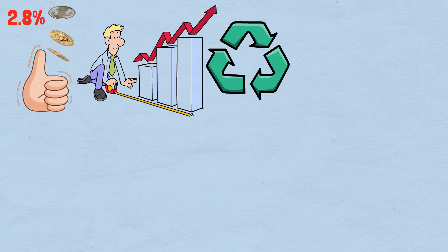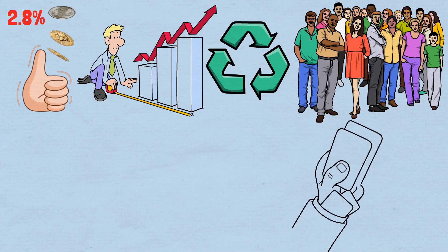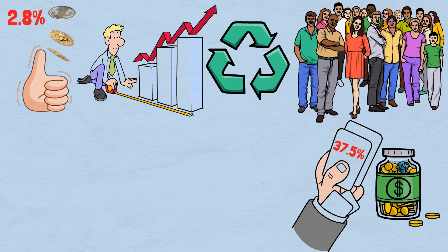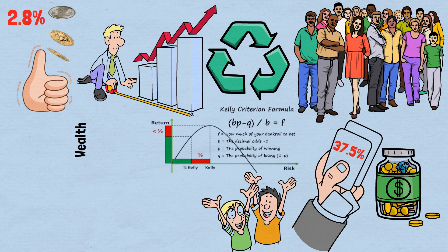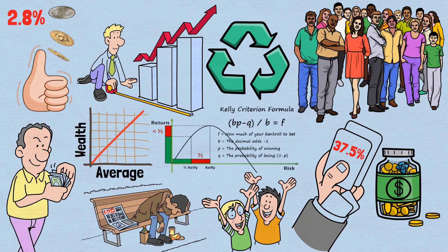When we run our simulation again with a million people, each betting exactly 37.5% of their wealth according to the Kelly criterion, something beautiful happens. The median wealth now grows steadily alongside the average. The typical person ends up wealthier, not poorer.